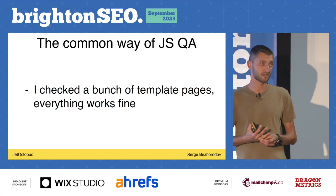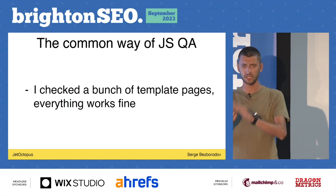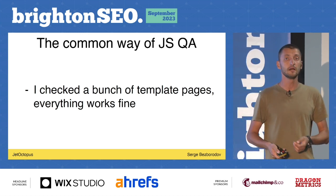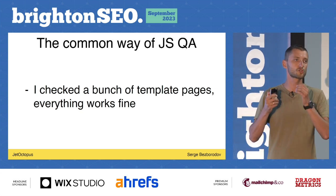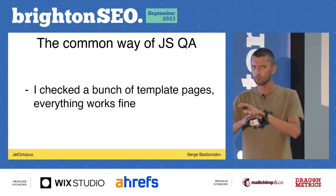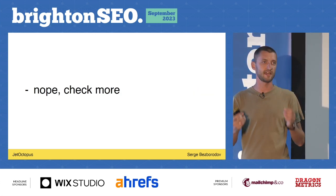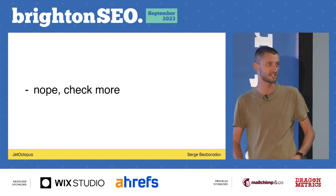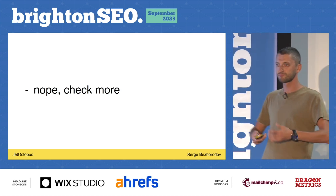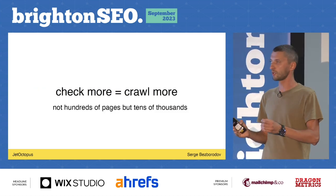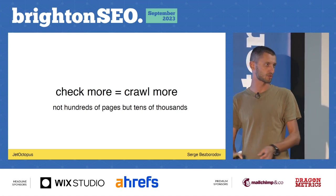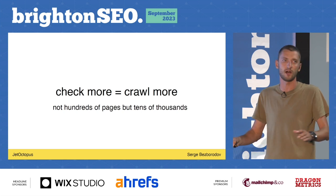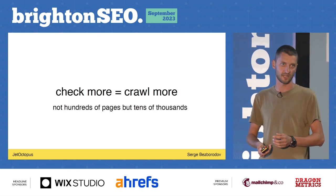How do we work with JavaScript issues? We have a product page, category page, index page, maybe a cart. We check them manually — works fine, we see footer, header, menu. But believe me, we've seen so many cases where clients had a pretty simple website, but developers are very talented people and can create bugs very deep on your website — on deep product pages, categories. So check more means only one thing: crawl more. Crawl as many pages as you can, whatever tool you use. Don't stop at a hundred pages, don't stop at a thousand. Just crawl more — there's no other way. No silver bullet here.